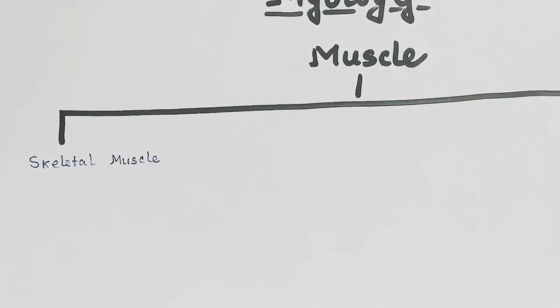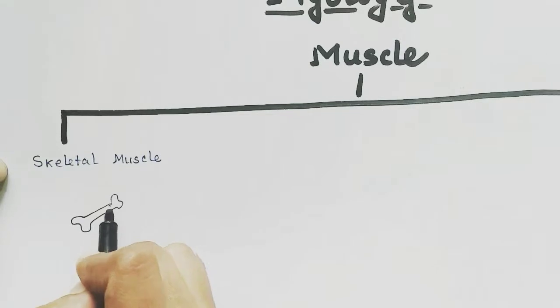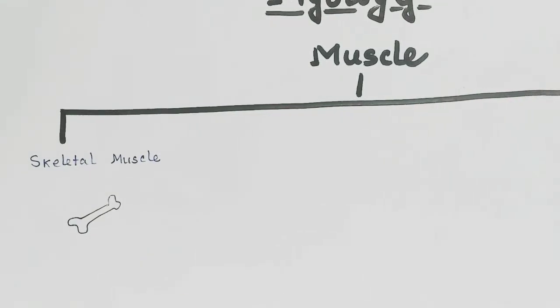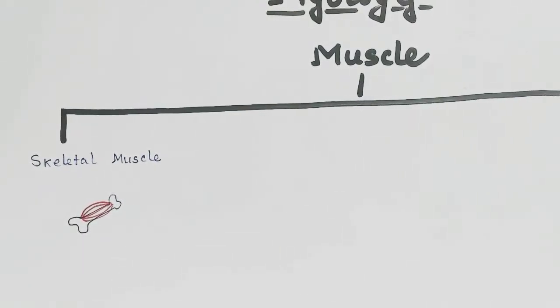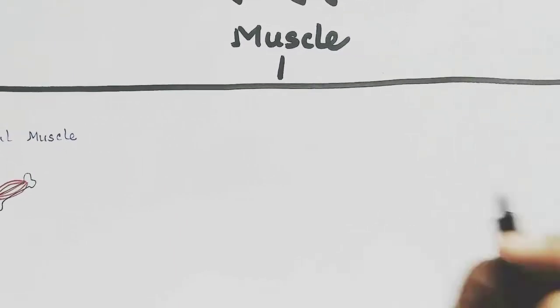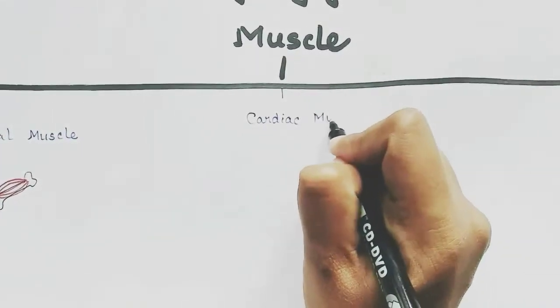This is a bone and the muscle on the bone surrounding the bone is called a skeletal muscle, like our biceps. The second one is the cardiac muscle, that is the muscle found in the heart.